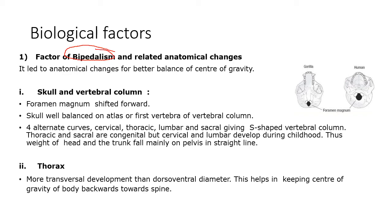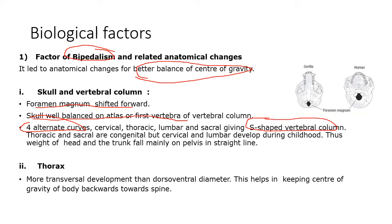Now the biological factors in detail. Bipedalism requires better balance for the center of gravity. This needed a forward shift of the foramen magnum, so the skull is well balanced on the first vertebra of the vertebral column. It also required the development of four alternating curves — cervical, thoracic, lumbar, and sacral — giving the S-shaped vertebral column, whereas chimpanzees have a C-shaped column. This S-shape allows the weight of the head and trunk to fall clearly on the pelvis in a straight line.